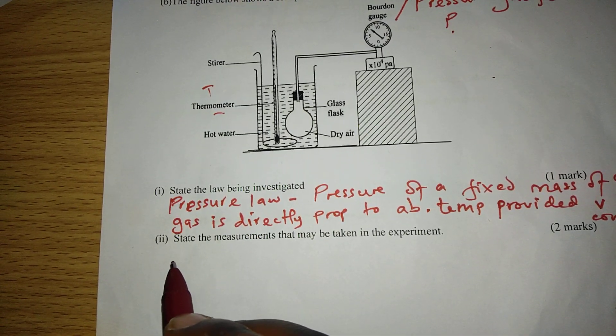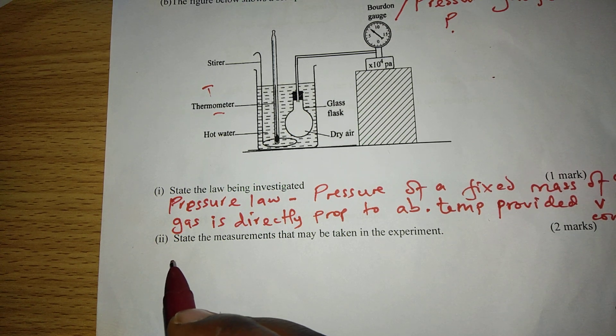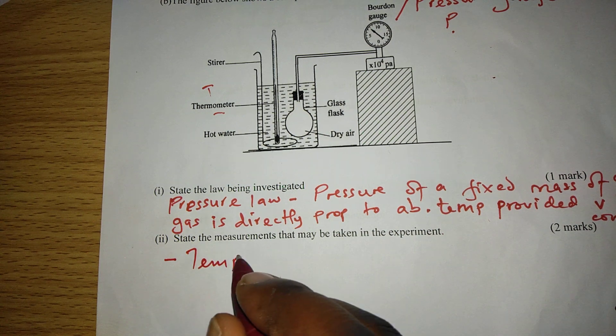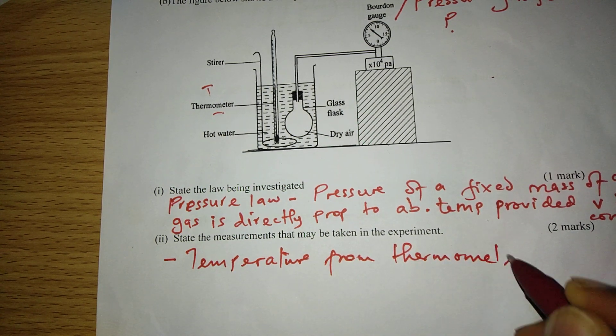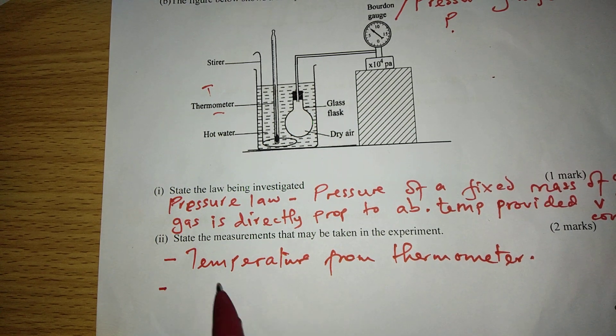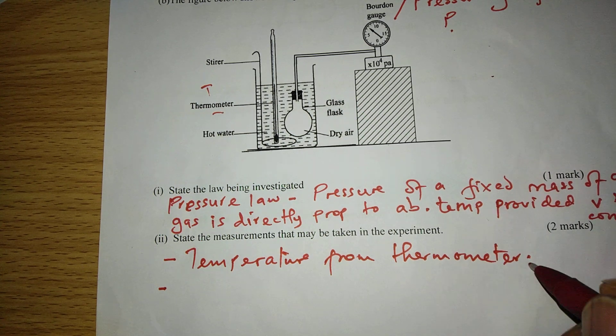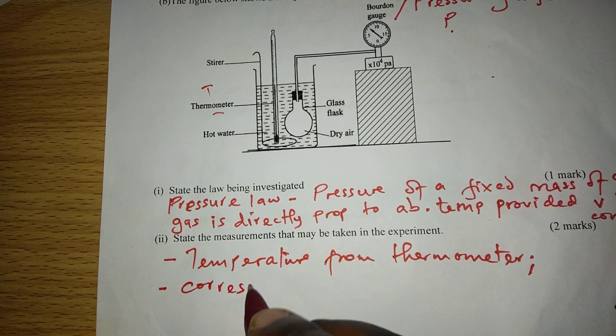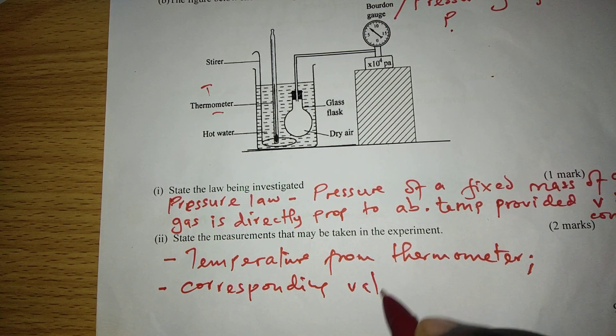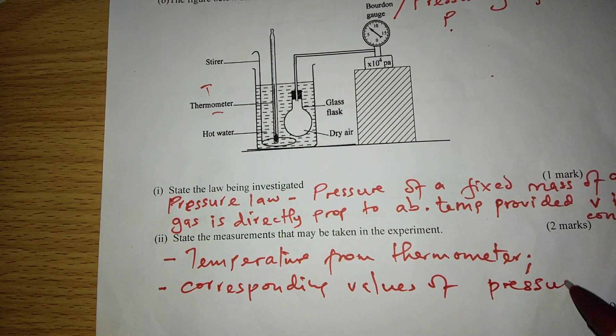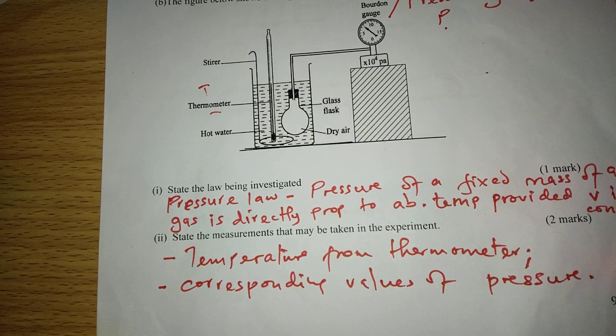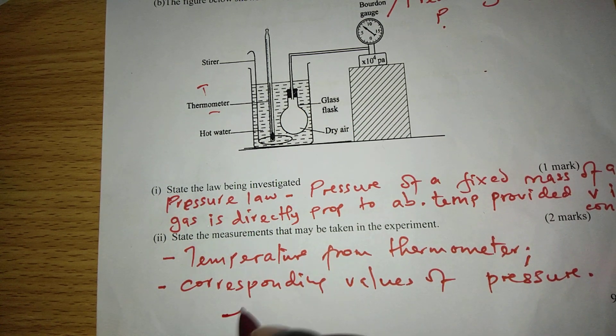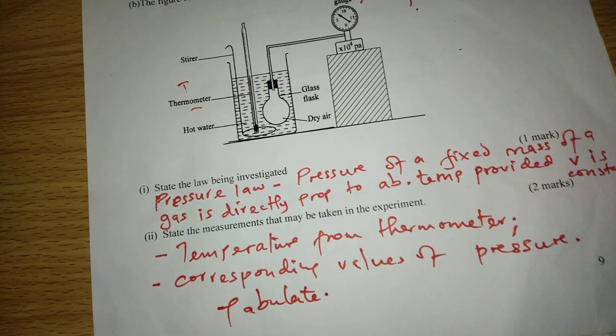The measurements which are supposed to be taken from this experiment are temperature from the thermometer and corresponding values of pressure. After some time, we confirm what the temperature is and also check the corresponding value of pressure, so that we tabulate the results. Temperature against pressure.